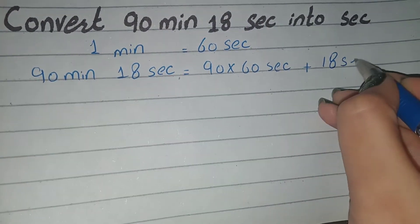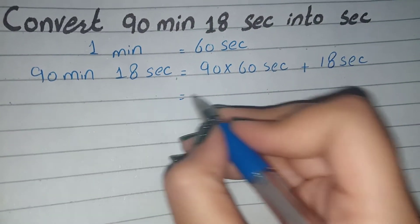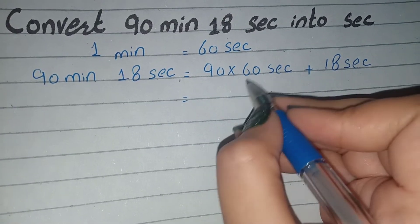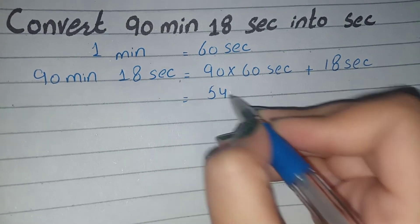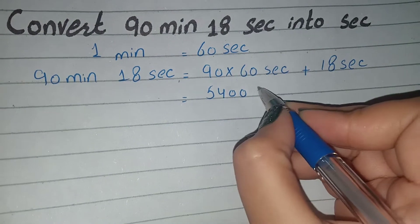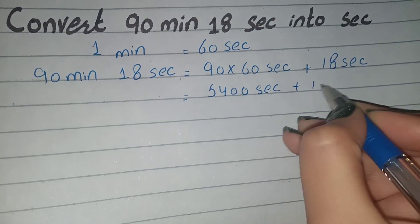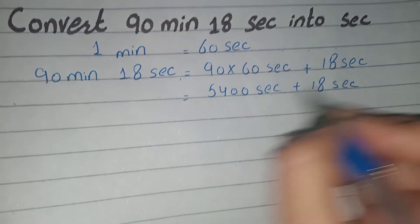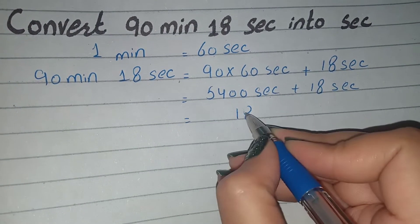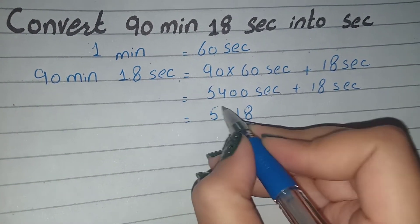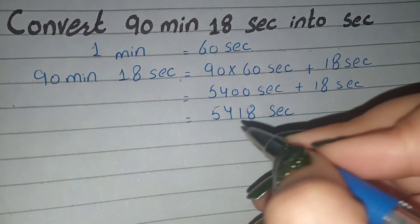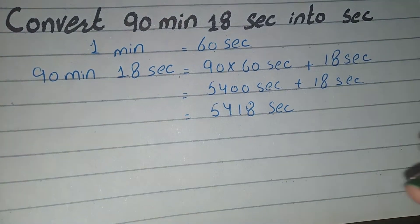18 seconds will come. We will multiply it. That gives 54. So we have 5,418. We will add it: 90 × 60 plus 18 seconds. The answer is 5,418 seconds. So 90 minutes 18 seconds equals 5,418 seconds.